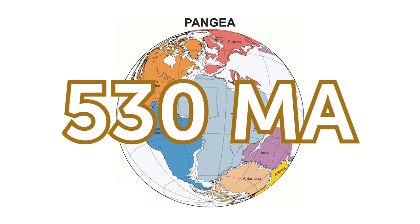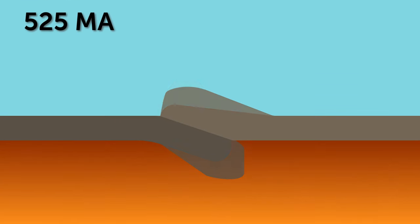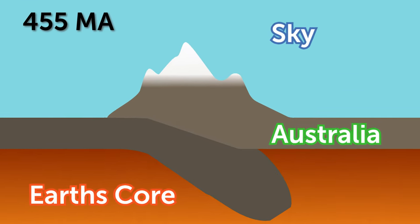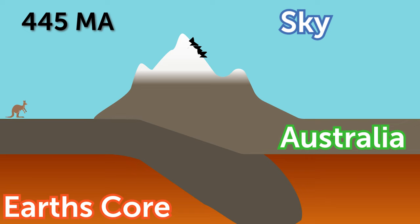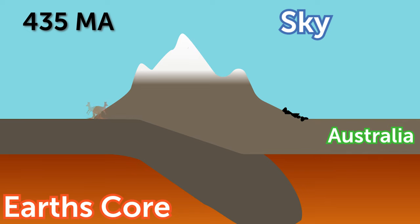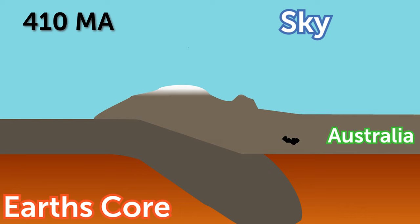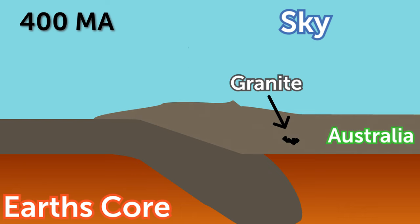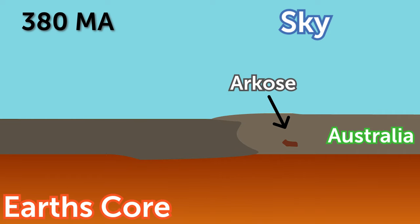Around 530 million years ago, mountain building events in the newly formed Australian tectonic plate created a mountain range similar to today's Alps and Himalayas. These mountains had strong igneous granite outcrops on top, which over time shredded off and got transported down to the valley. Millions of years of erosion shrank these mountains and buried the layers of weathered granite with kilometers of material, compacting it again to form extremely hard sandstone called archos.